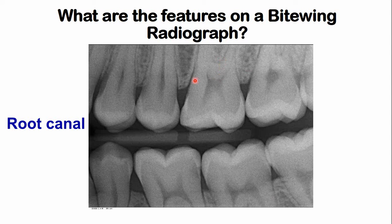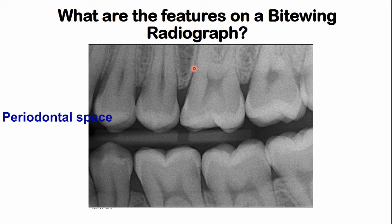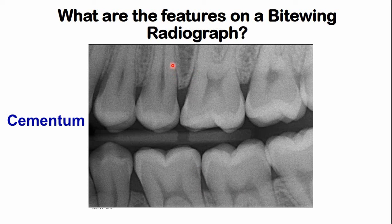Below the pulp chamber, the visible portion is the root canal. The space between the tooth and the bone is the periodontal space. The root surface is covered by cementum, which is not clearly visible because cementum is not highly mineralized and is a very thin layer.